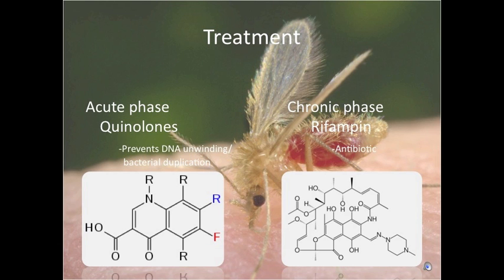Treatment for Carrion's disease depends on the stage that the victim is in. The acute phase treatment is quinolones, a drug that prevents DNA unwinding and bacteria duplication. Treatment for the chronic phase is rifampin, which is a typical antibiotic.